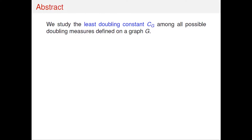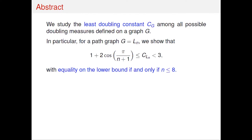To stress the point: it's not the best doubling constant for a measure, it's the best doubling constant for a metric space. In particular, I will fix my attention on graph metric spaces. I'm going to focus on some particular examples and briefly describe some general results, then focus my attention on specific graphs.